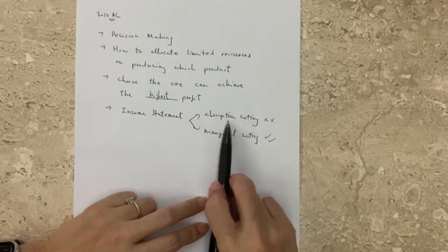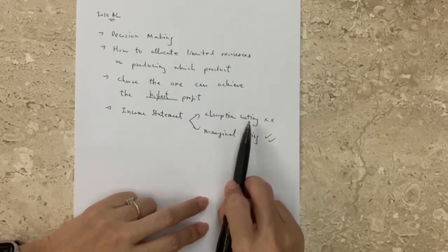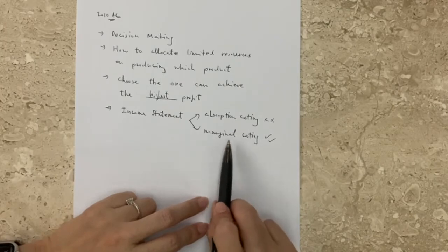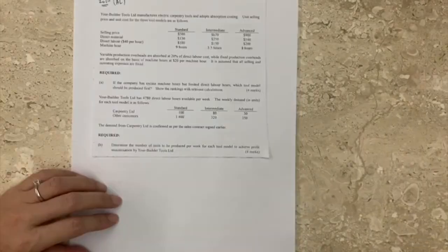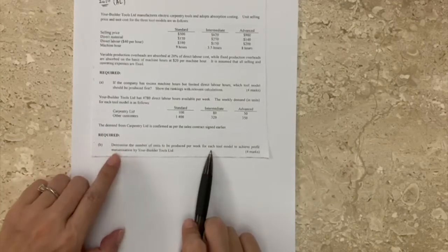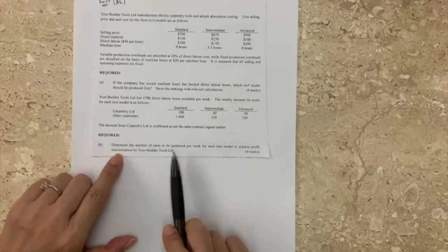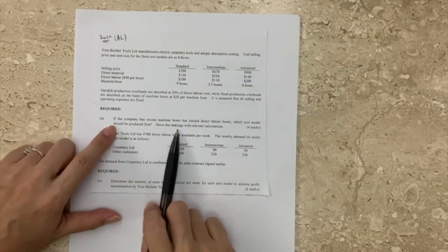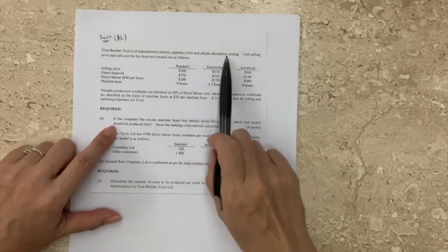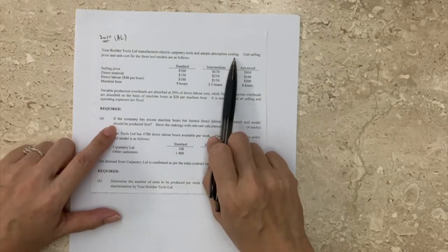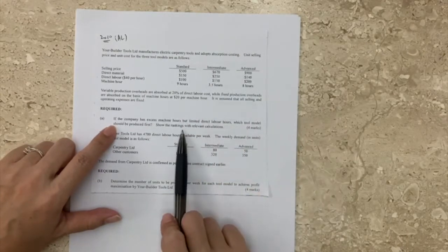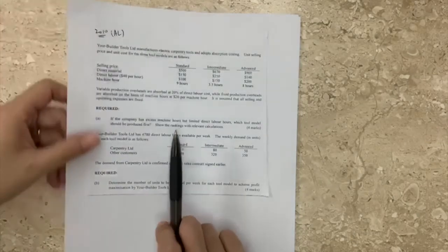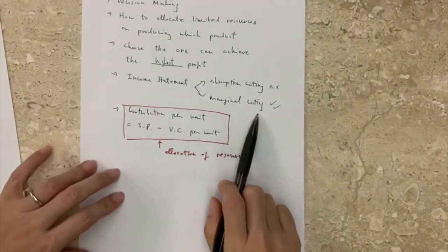Fixed costs are irrelevant for decision making, but only variable costs will be very important for decision making. Therefore, before we work out the maximum profits, we have to go back to making choices on how to allocate limited resources on which model. Even though the company is using absorption costing, since we have to make a choice, we are going to convert the absorption costing system into marginal costing.